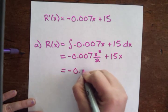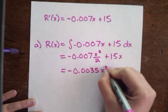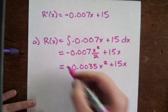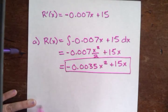That gives us negative 0.0035x squared plus 15x. And that is the answer that you're looking for, for part a.